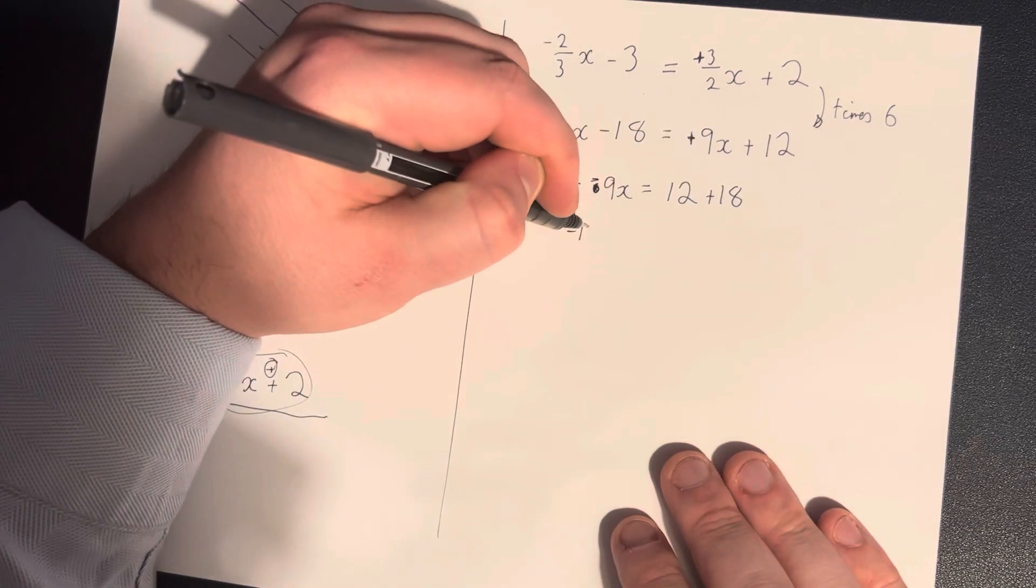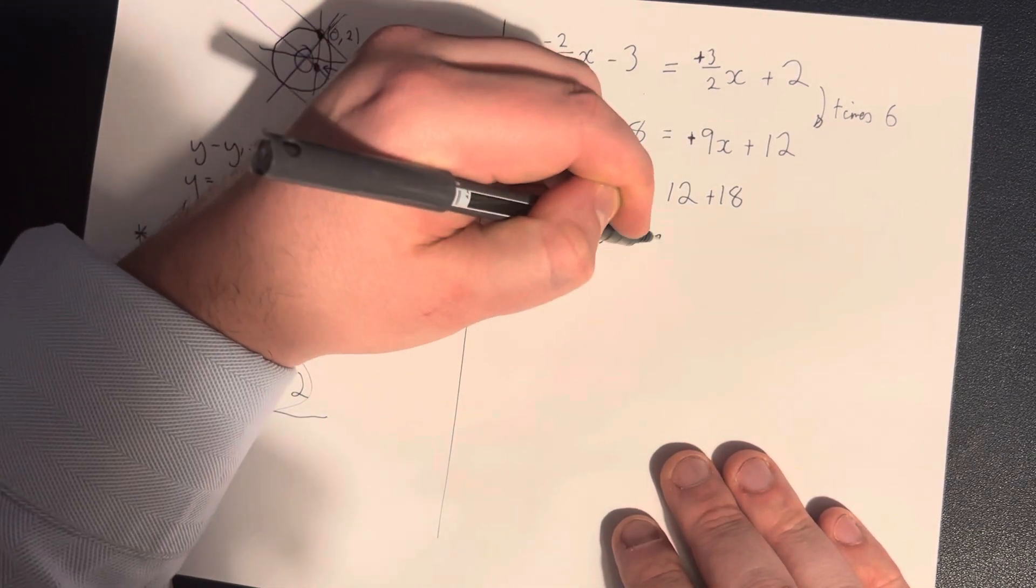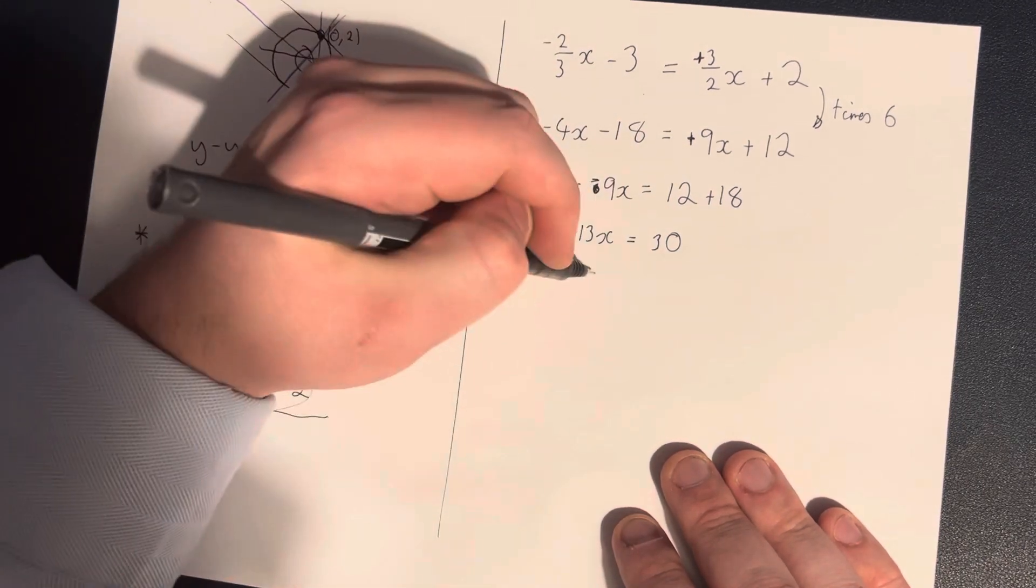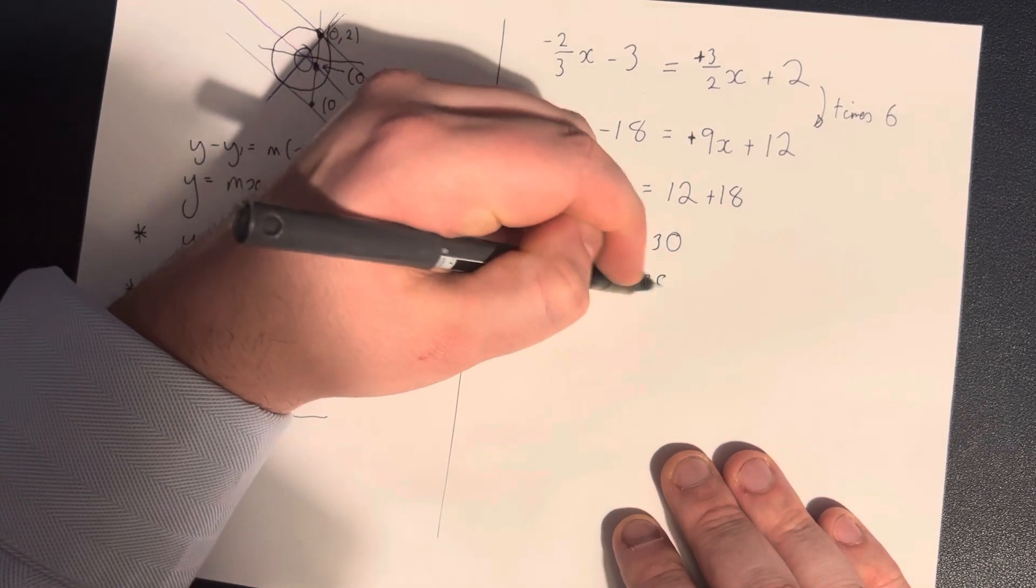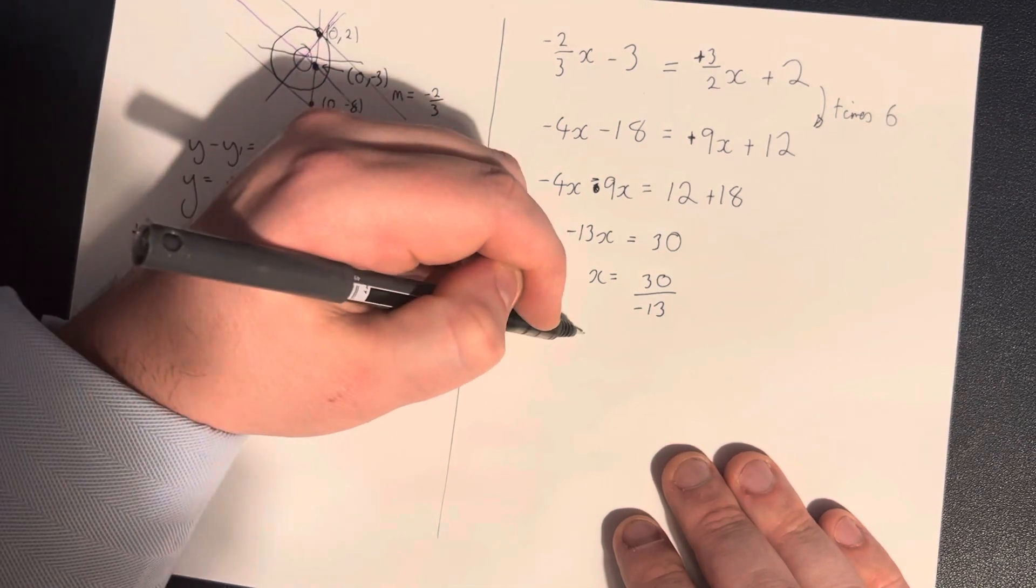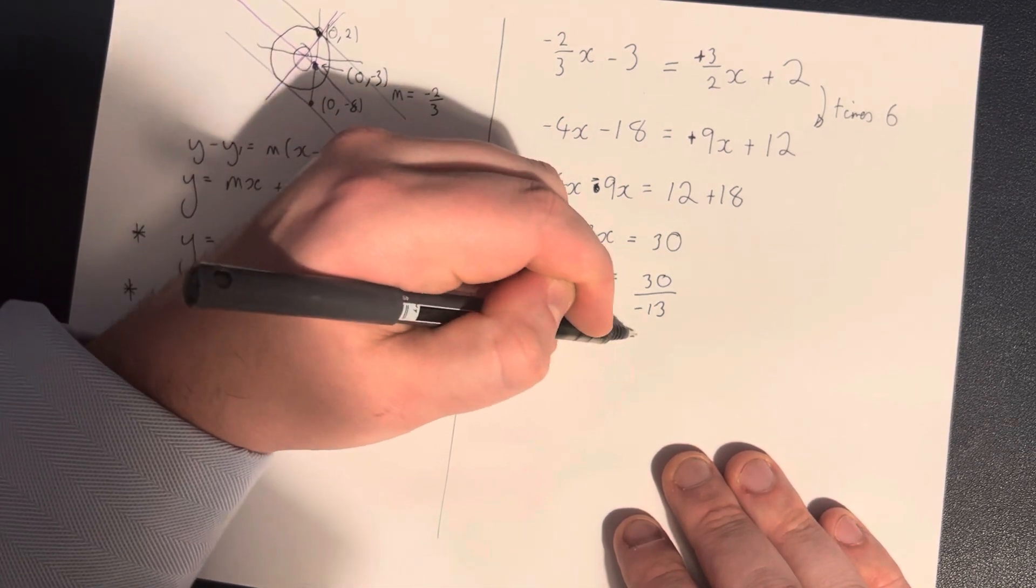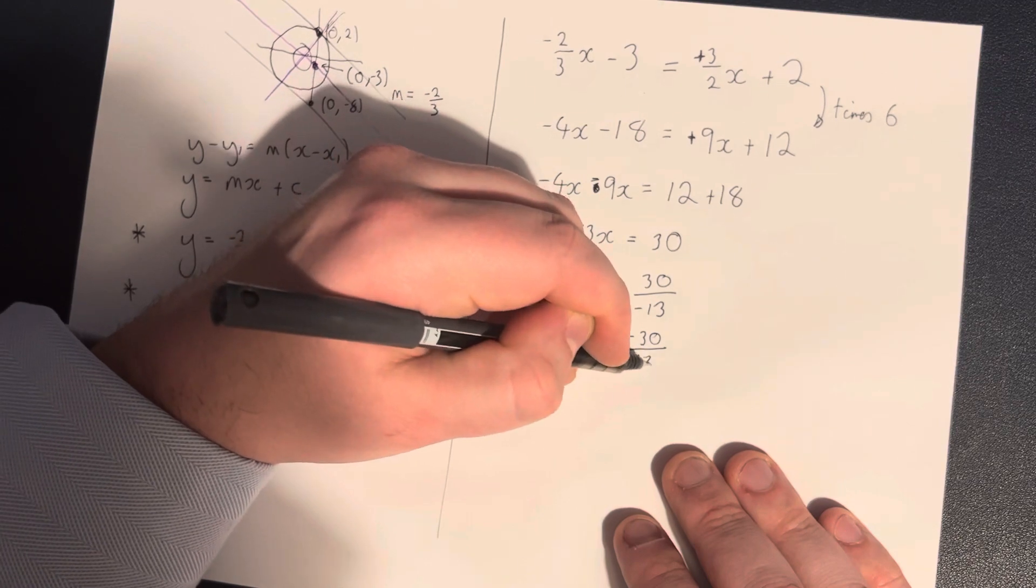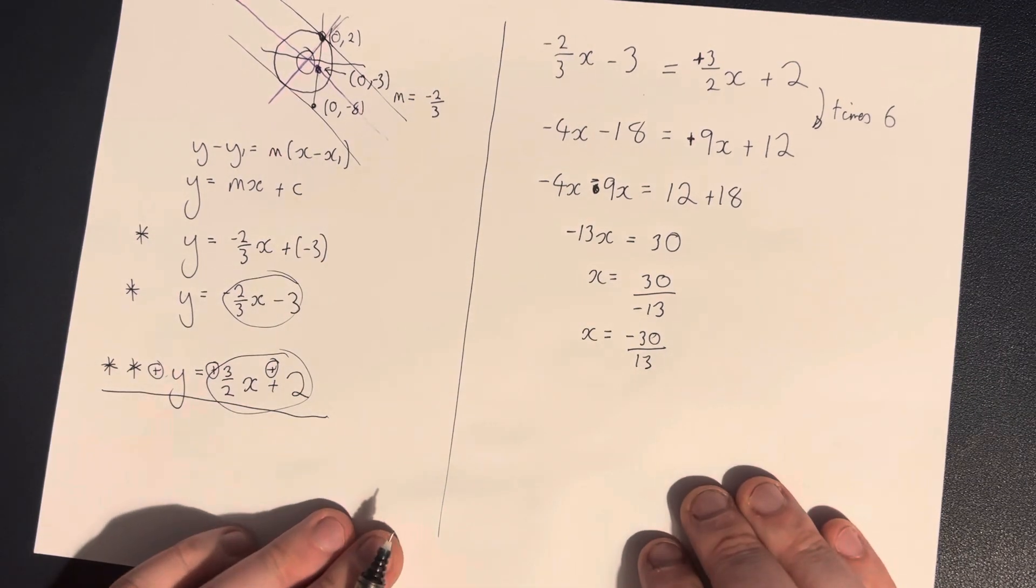We end up with minus 13x is equal to 30. So therefore, x is equal to 30 over negative 13, or kind of betterly, if that is a word, minus 30 over 13.